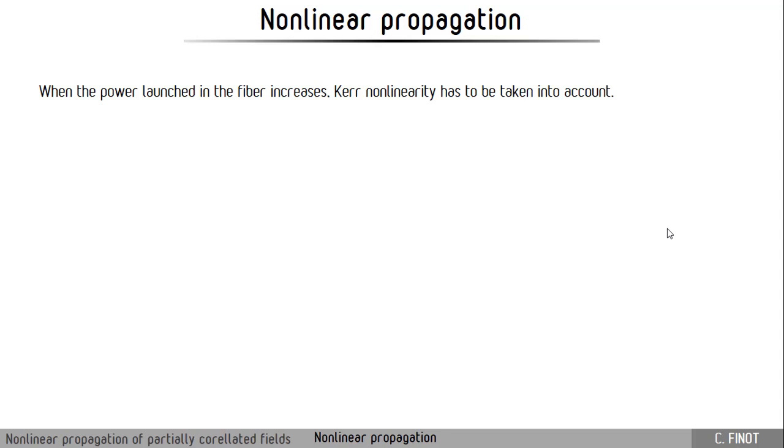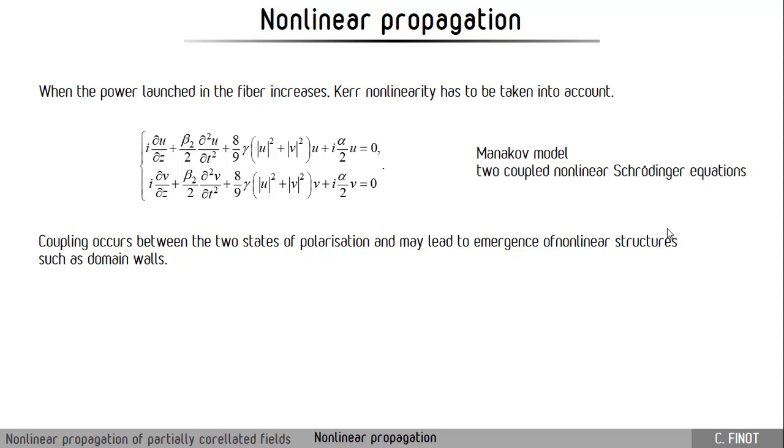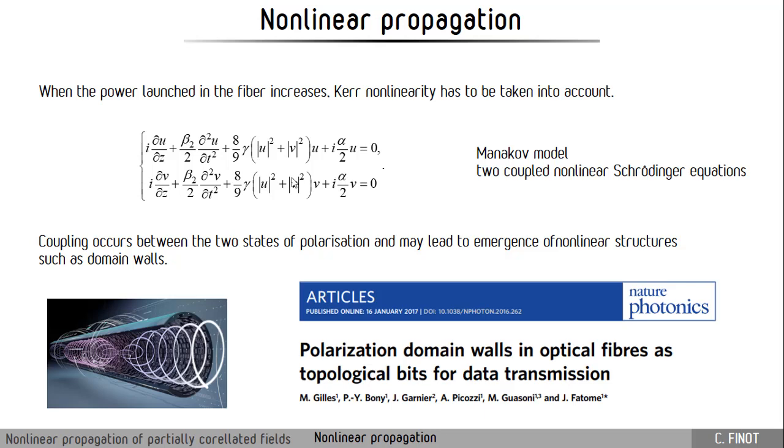Now what happens if there is some non-linearity that is experienced? When we increase the power in the fiber propagation there will be some consequences of Kerr non-linearity. There will be two kinds of consequences: there will be first the self-phase modulation that is induced by the signal itself, and there will also be a coupling between the two phase modulations. To model this we can use a Manakov model that is relevant for the fiber that we will use. As you will see there will be a coupling between the two states of polarizations, and this coupling may lead to the emergence of various coherent structures.